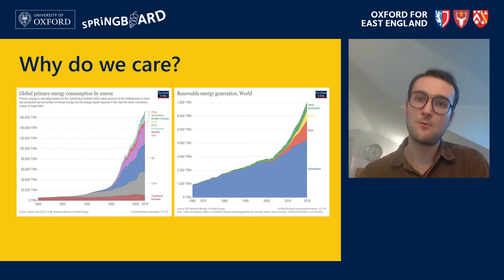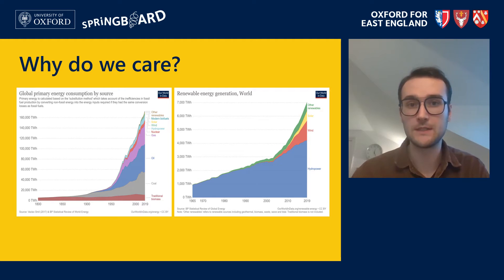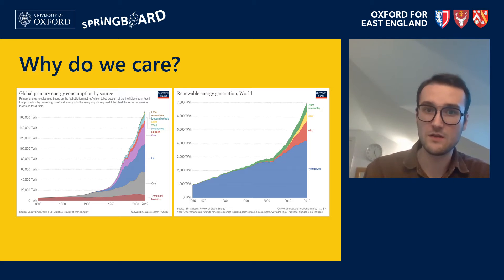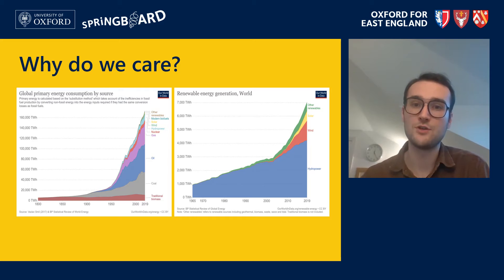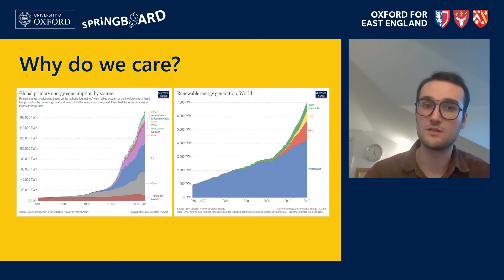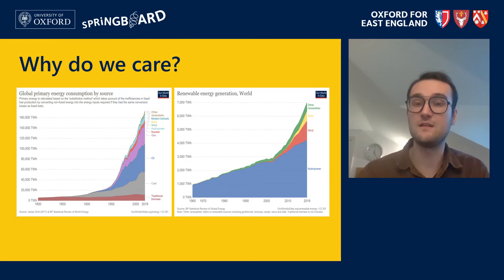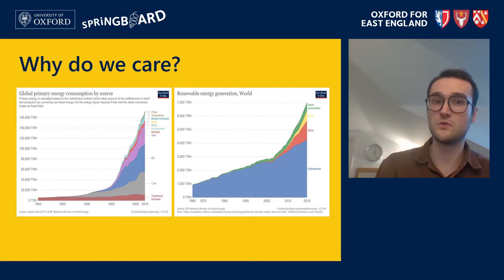I wanted to start off by talking about why we should even care about optimizing our turbines — why even have them at all? The reason boils down to our society's need for energy and the impacts of climate change. The figure on the left shows the world's energy consumption by source. We can see that both our demand for energy is growing and the amount we get from non-renewable or polluting energy sources dominates our energy production. This demand is expected to grow by 50% by 2050, so we need to drastically improve the amount of energy we receive from renewable sources.